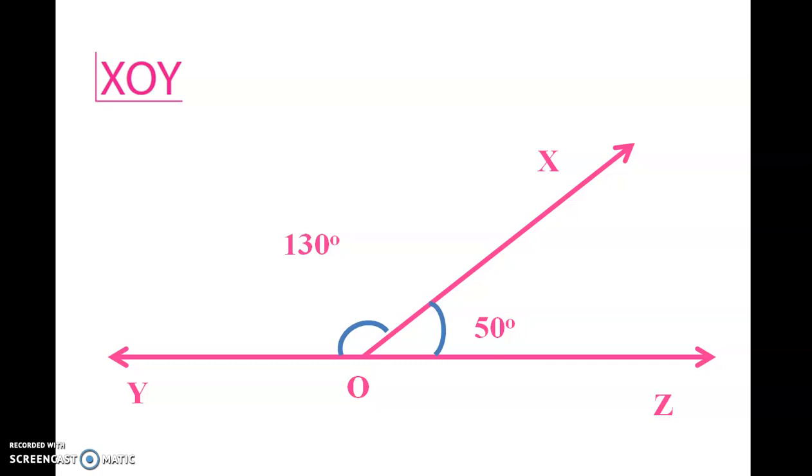Angle XOY plus angle XOZ equals 130 degrees plus 50 degrees, which equals 180 degrees.